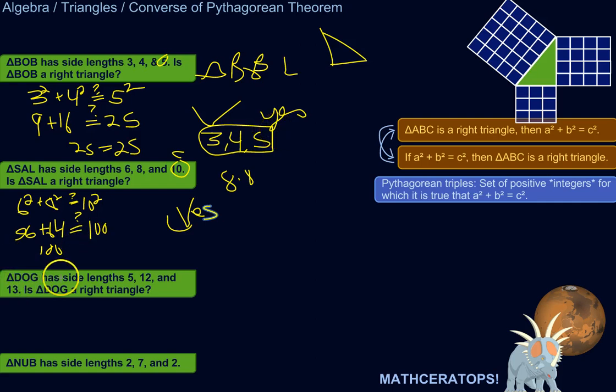Alright, triangle DOG has side lengths 5, 12, and 13. Is DOG a right triangle? Well, let's see. So 13 is the largest one. So let's do 5 squared plus 12 squared equals 13 squared, question mark. We'll see if that's true. 5 squared is 25.